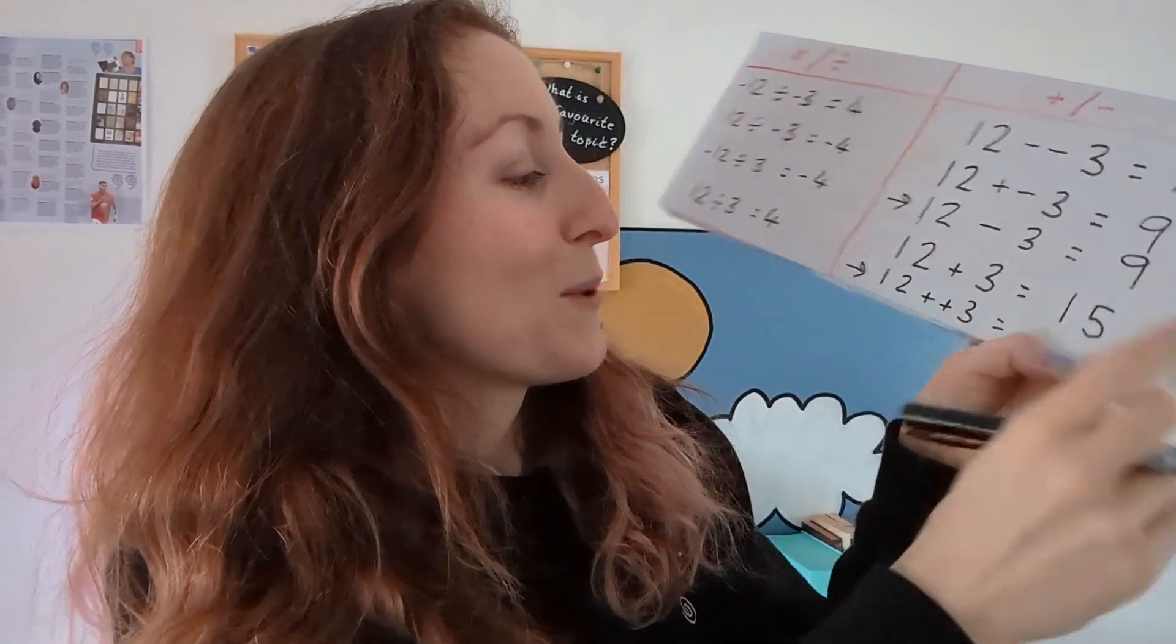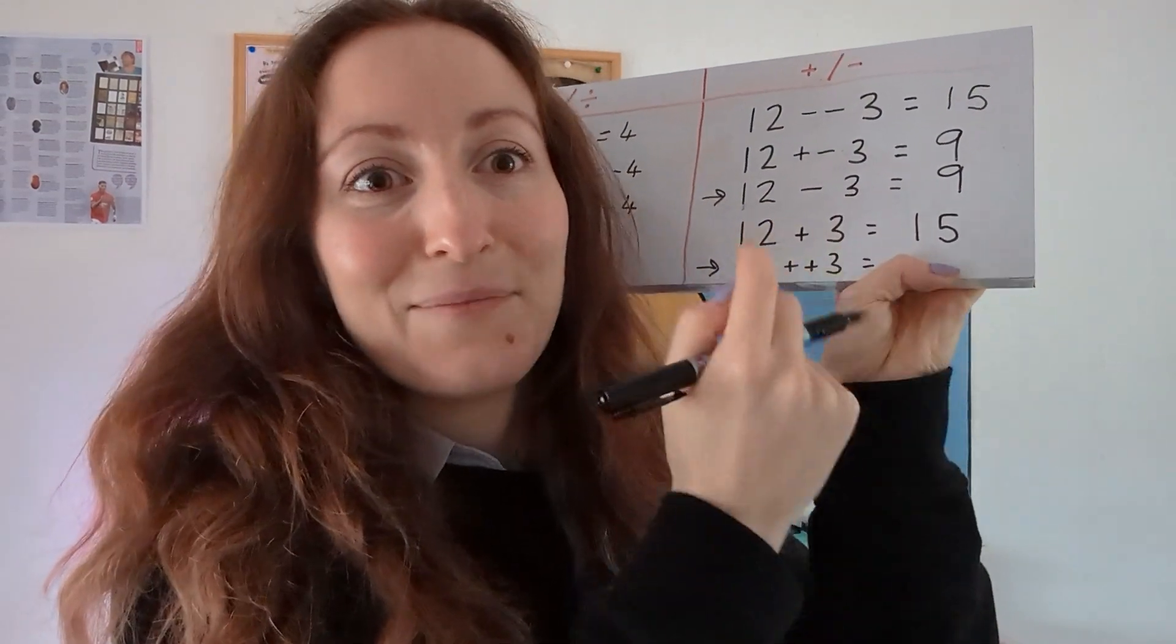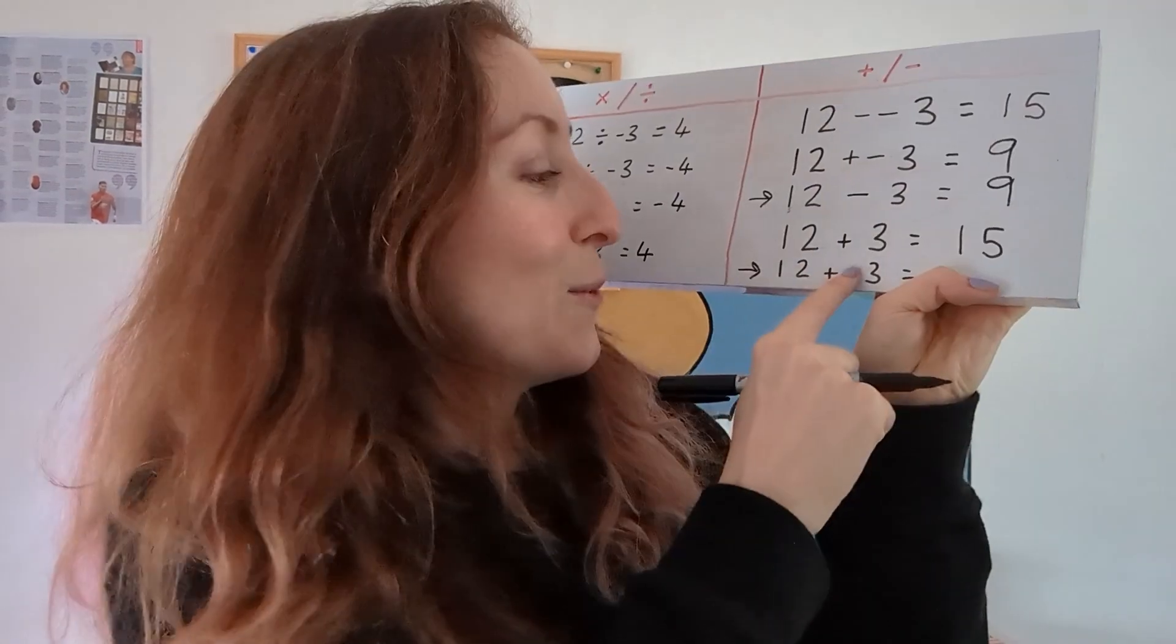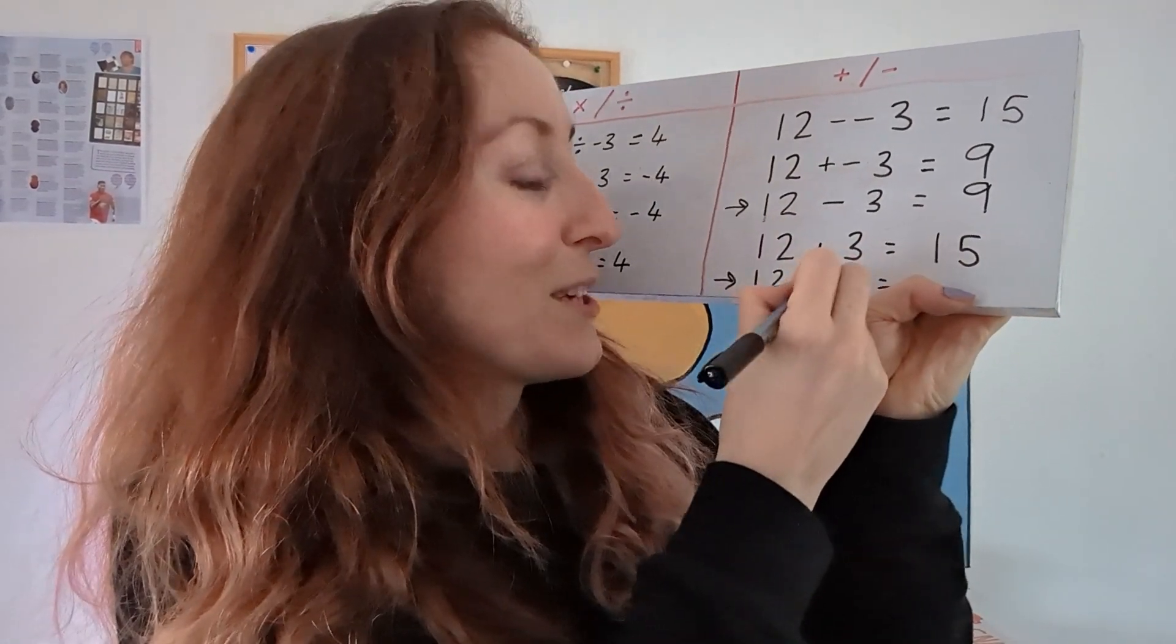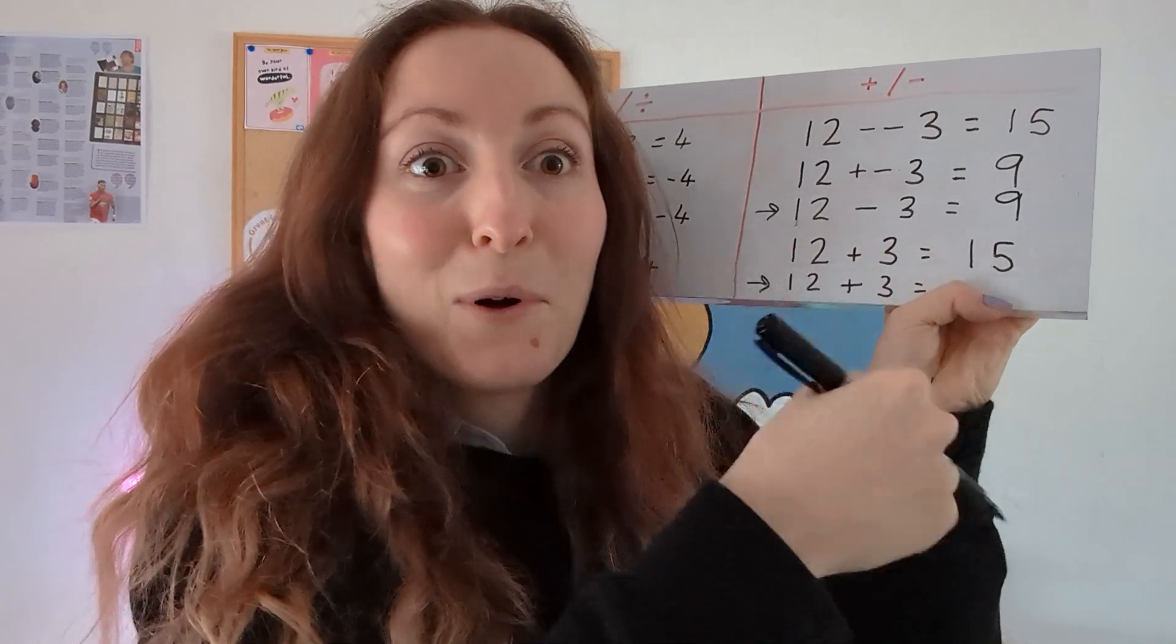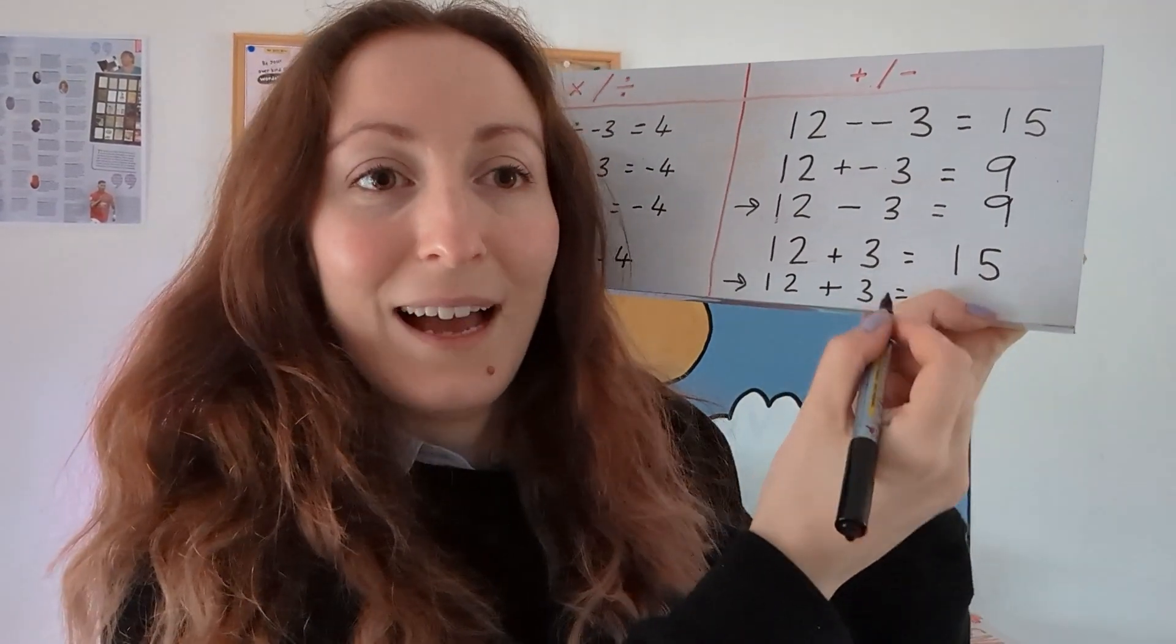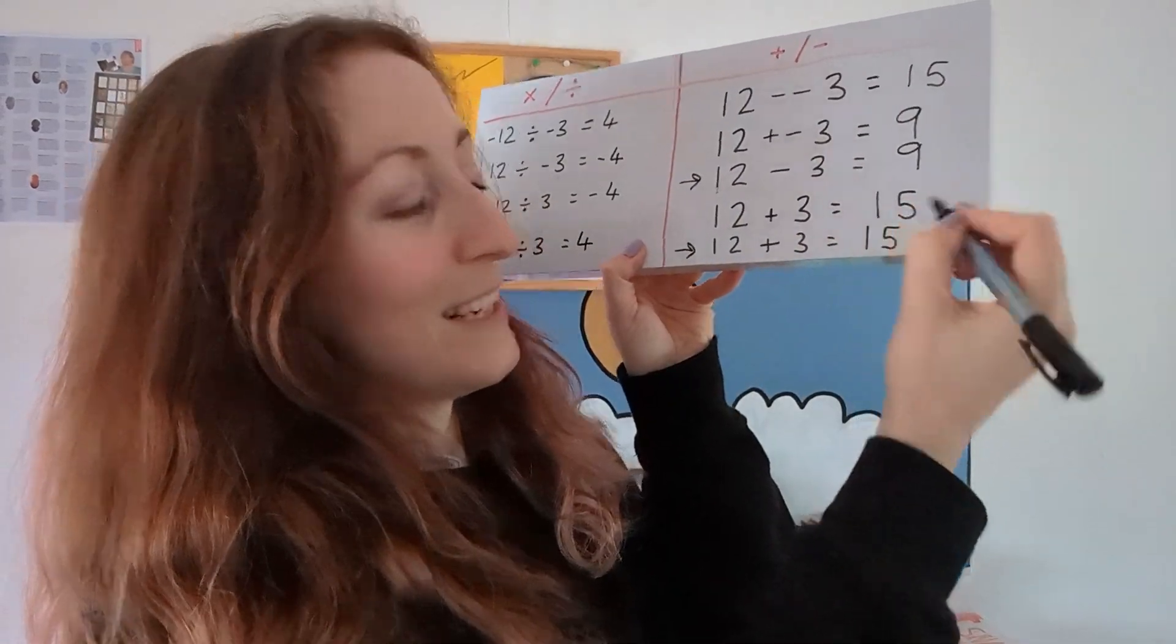And 12 plus a positive 3, well two positives as before make a positive. So we would just change that to one plus. It's just that we don't ever bother saying 12 add positive 3. But if we did, the rule still works and it's 12 add 3, which is 15.